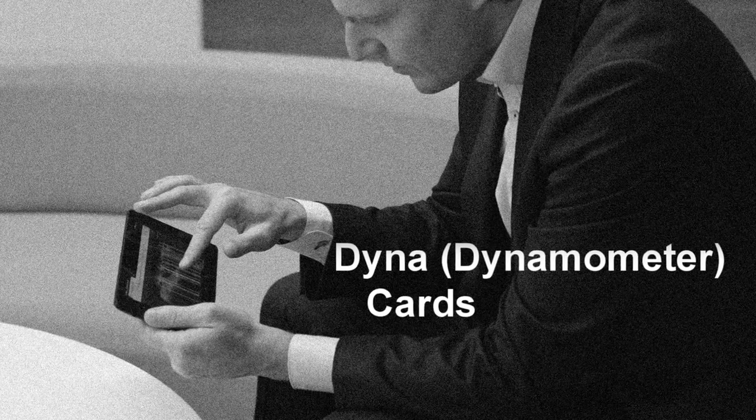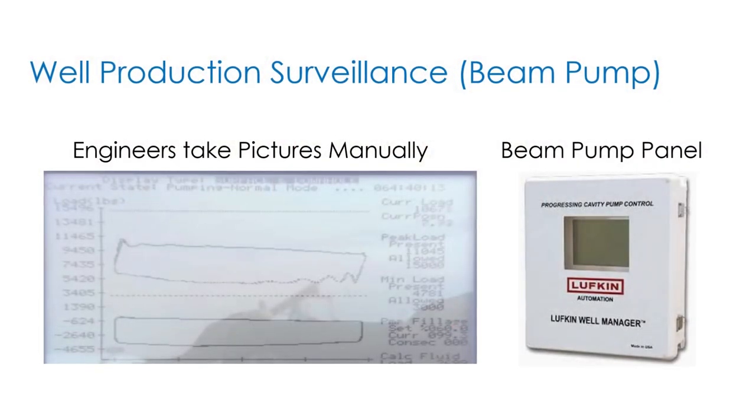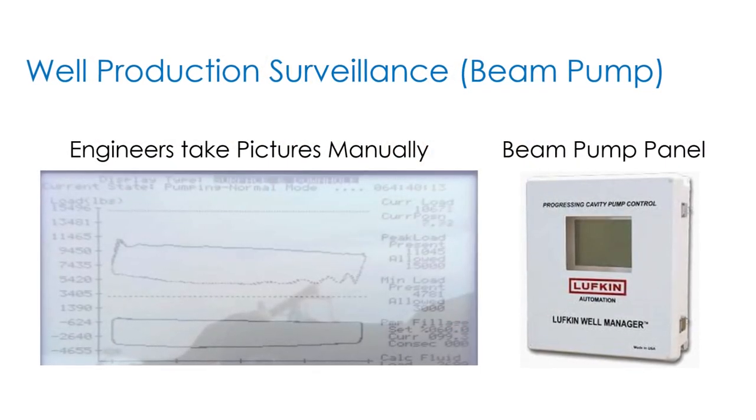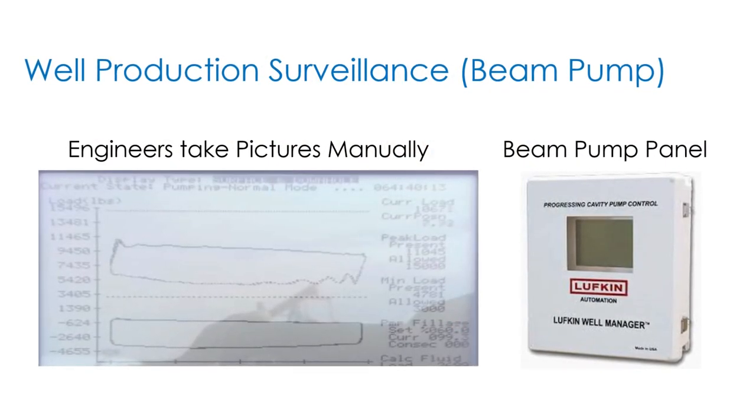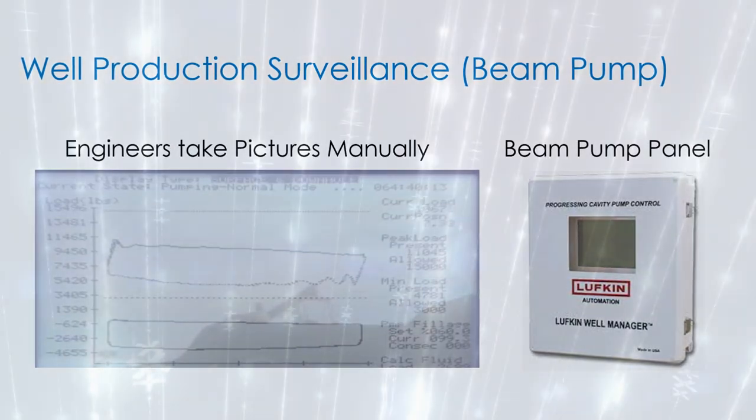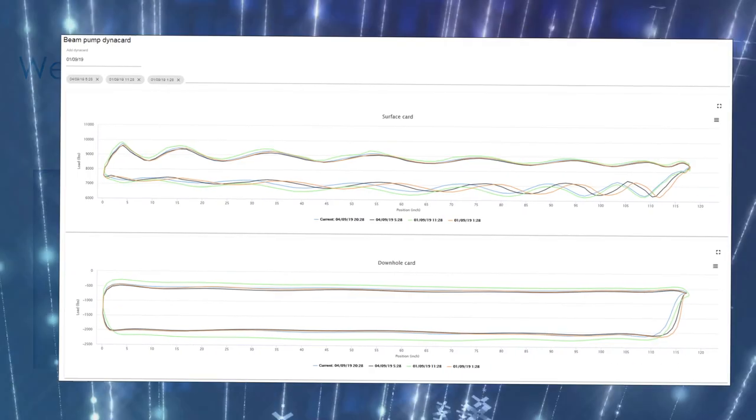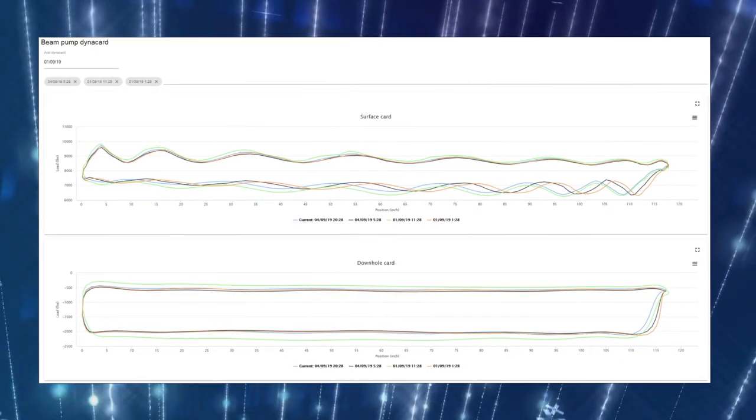Currently DynaCards are the only way to understand the performance of the beam pumps. It was very primitive — they take their camera, take a picture, and then send a small report to headquarters. So what we have done is connected the DynaCards from the field to the headquarters. Using OSI PI infrastructure and AF, we have 24 cards in a day, from one card per month.